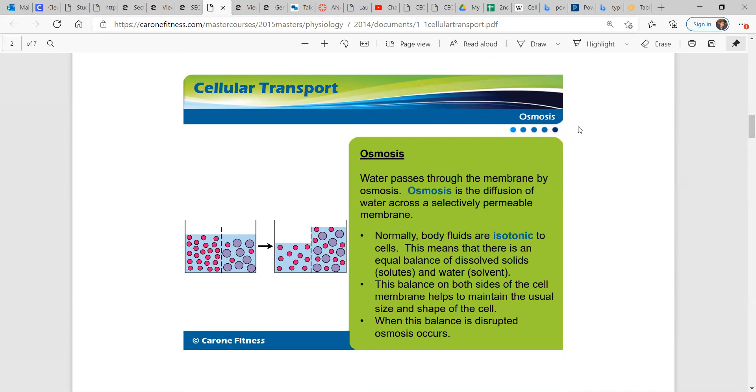Normally, body fluids are isotonic to cells. Isotonic means that there is an equal balance of dissolved solids, solutes, and water, the solvent. This balance on both sides of the cell membrane helps to maintain the usual size and shape of the cell. When this balance is disrupted, osmosis occurs.